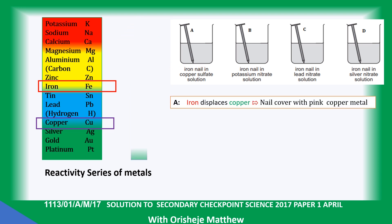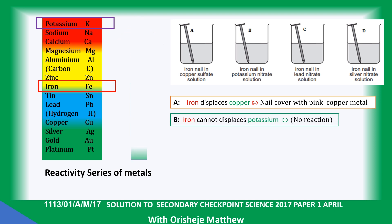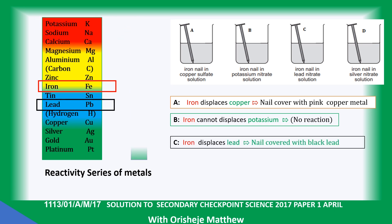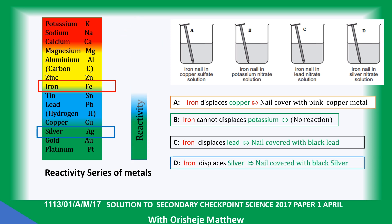Iron displaces copper from copper sulfate. Iron is below potassium, so there is no reaction — iron cannot displace potassium. For the third reaction, iron is above lead, so iron displaces lead. For the last one, iron is above silver in the activity series, so iron can displace silver from silver nitrate.